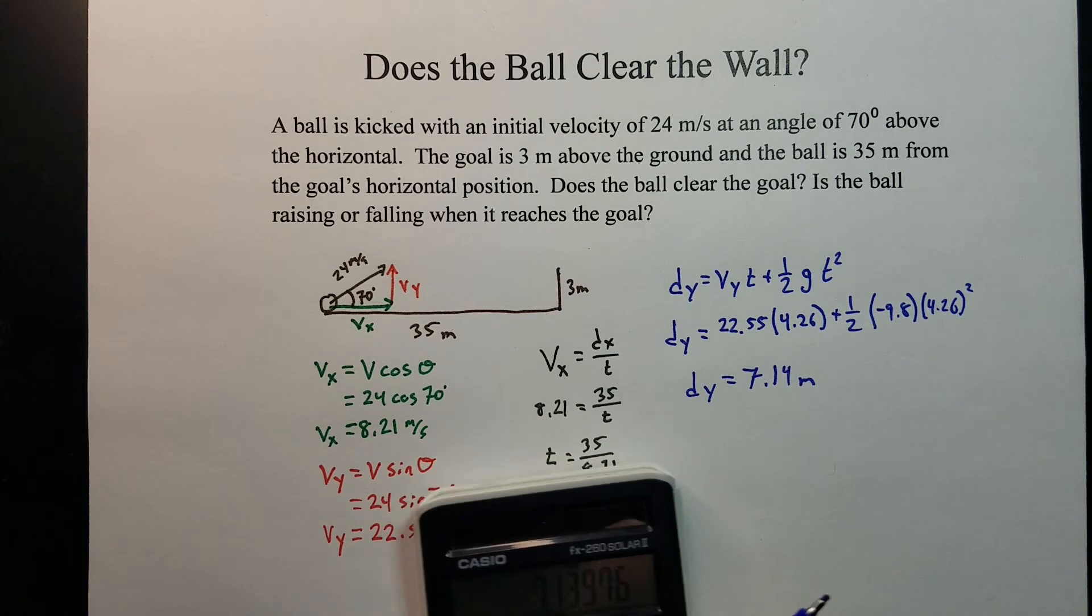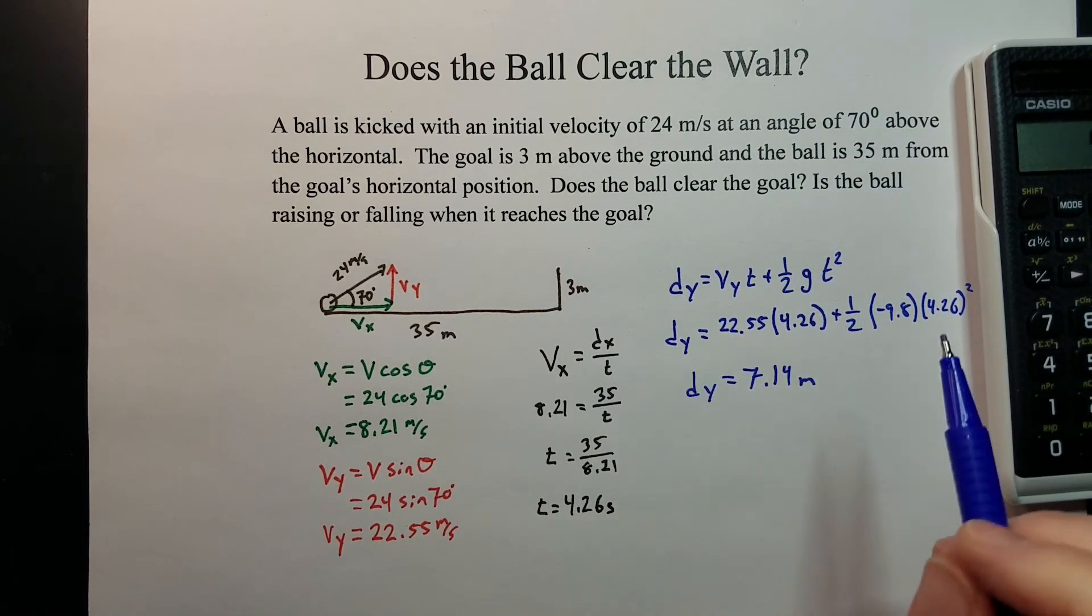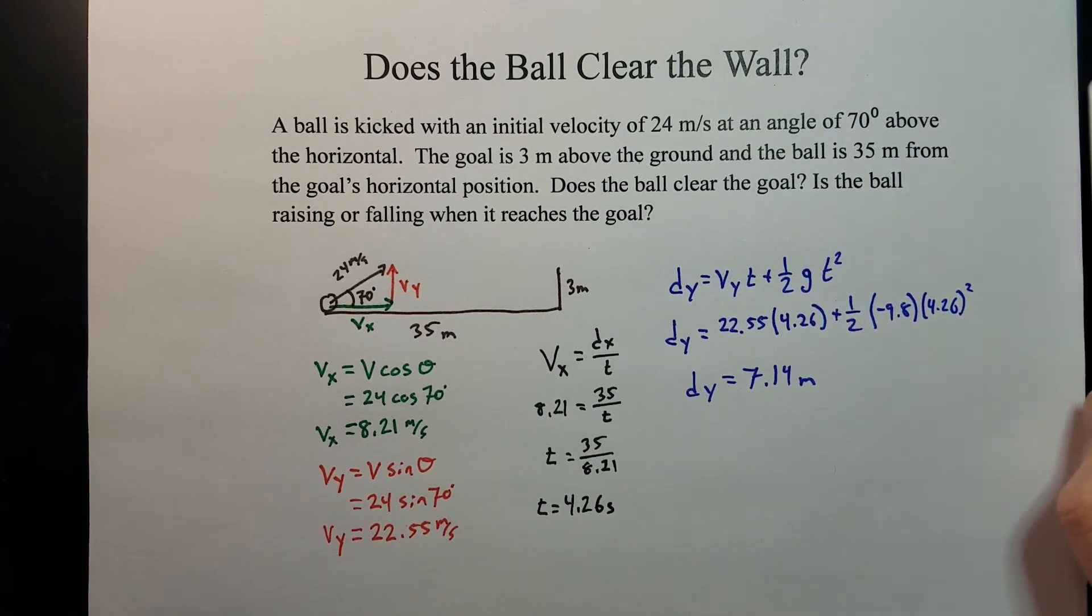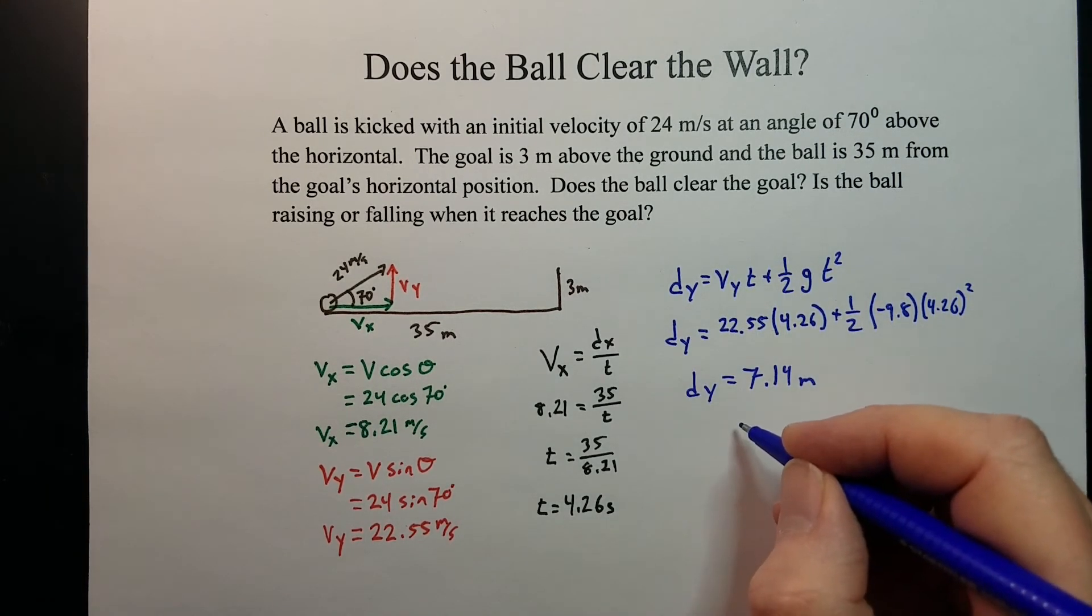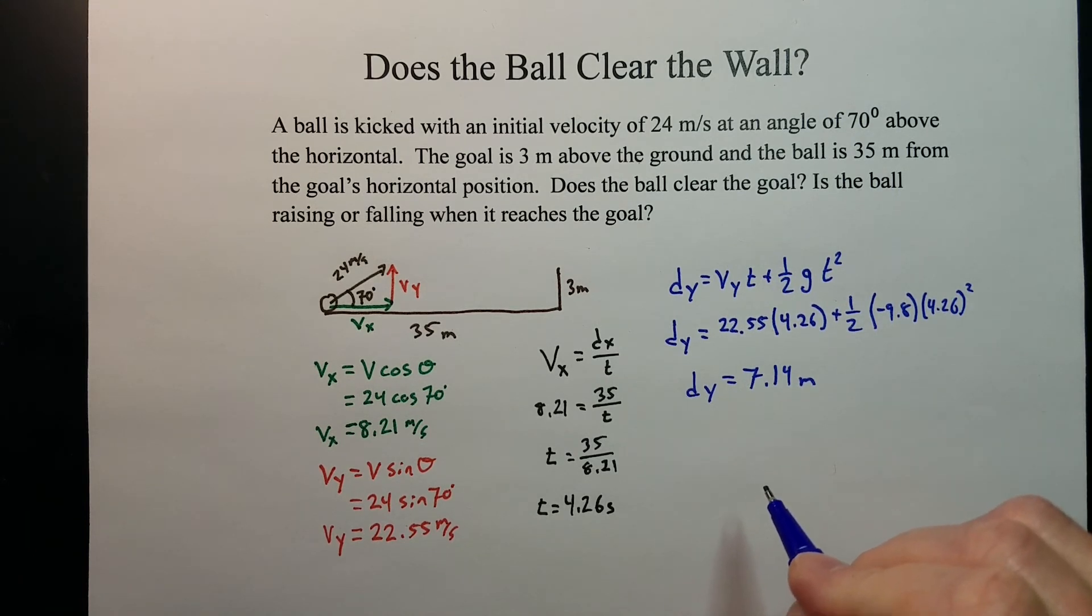So that ball is going to be 7 meters above the ground. So that means it clears the wall by about 4.14 meters. So it easily clears the wall.